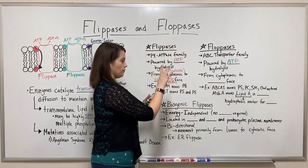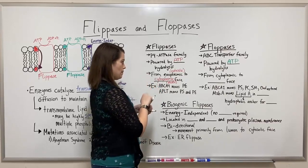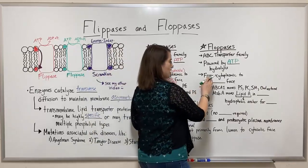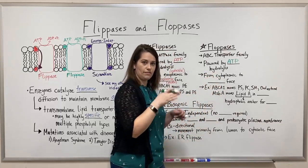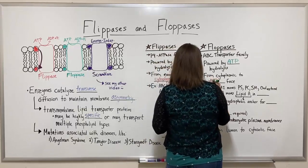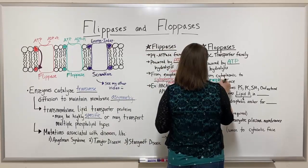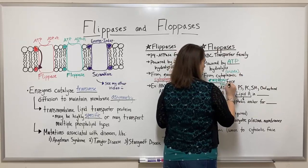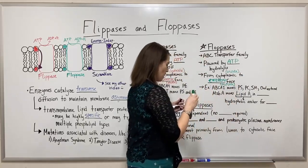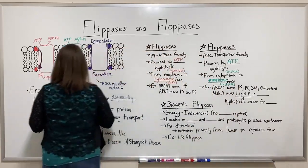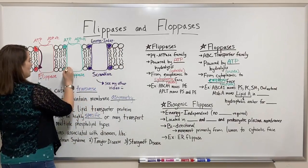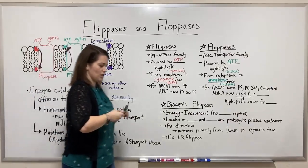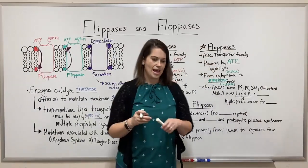The movement for flopases is in the opposite direction from flipases. Where flipases move from the outside to the inside, flopases do the opposite — they move phospholipids from the cytoplasmic inner leaflet, facing the cytoplasm inside the cell, to the exoplasmic face. So they go from the inside leaflet to the outside leaflet.